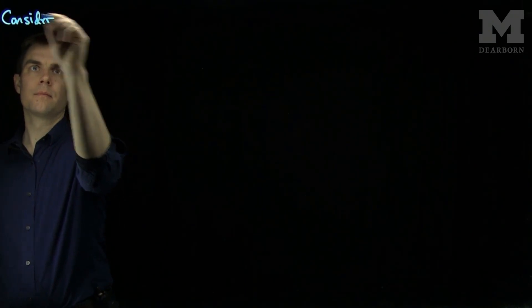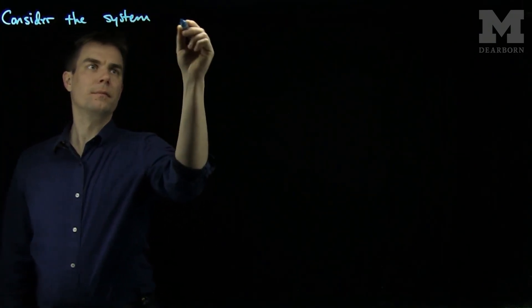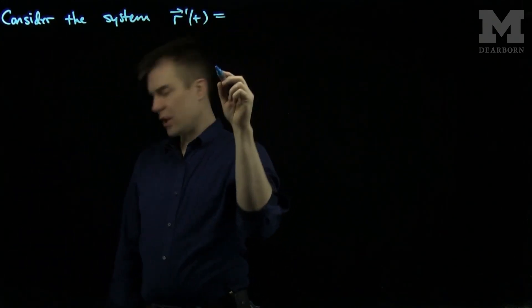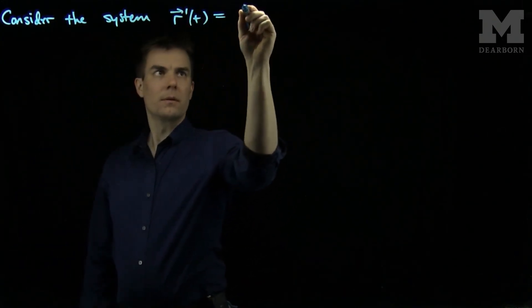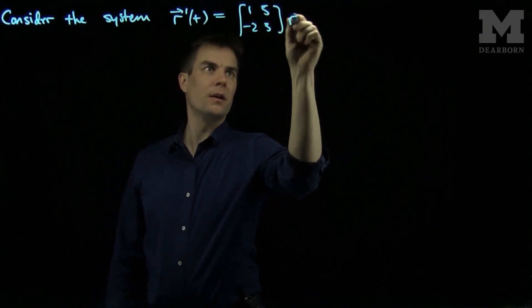Let's consider the system r'(t) equals [[1, 5], [-2, 3]] times r(t).